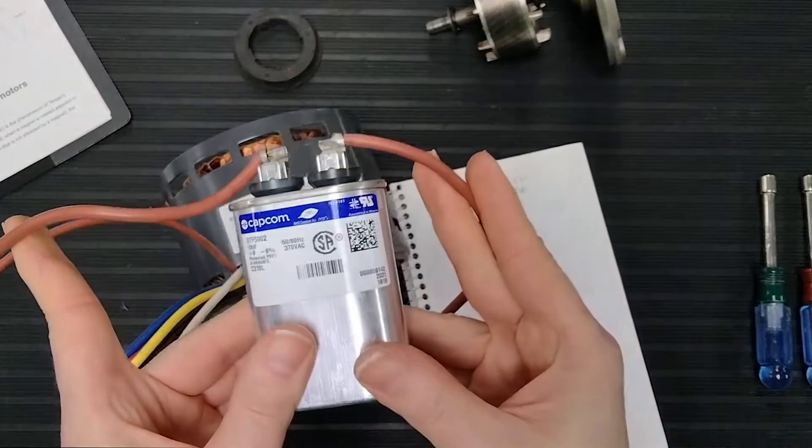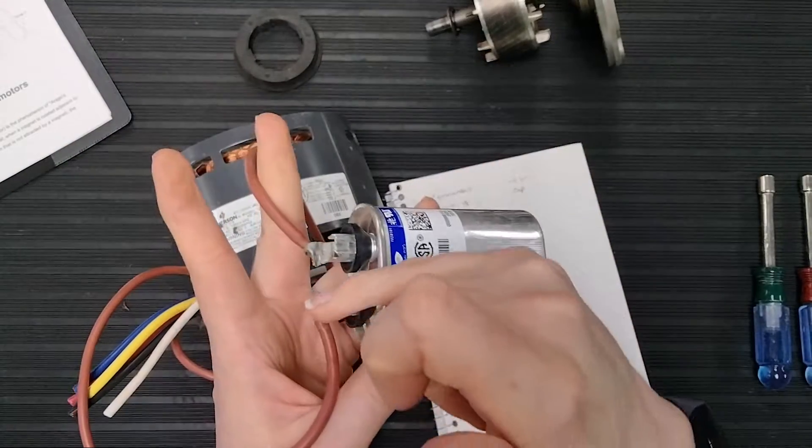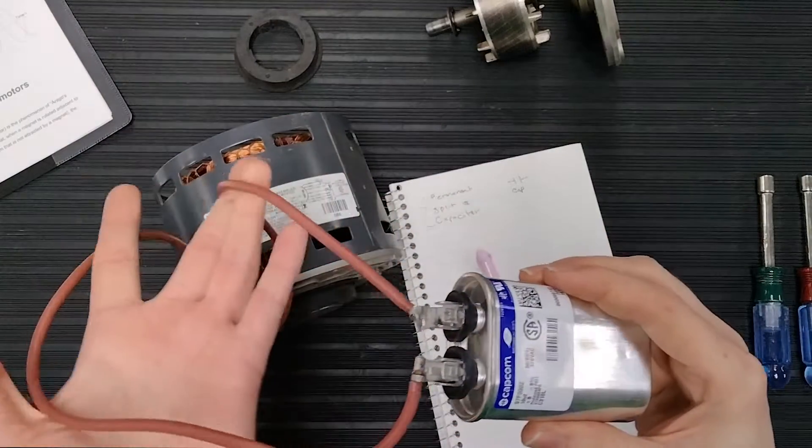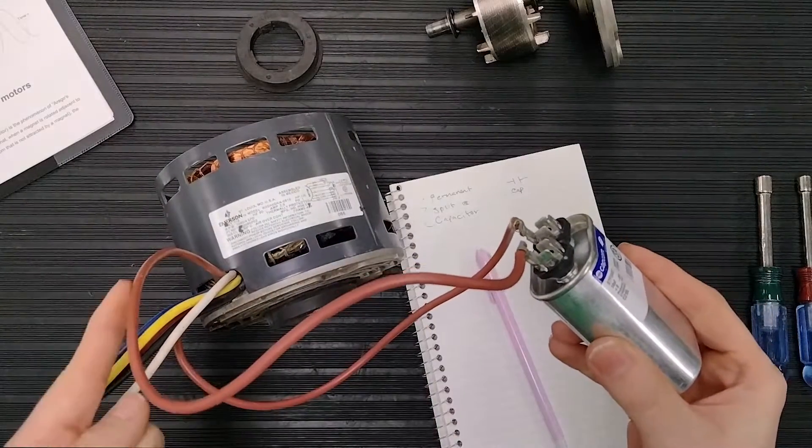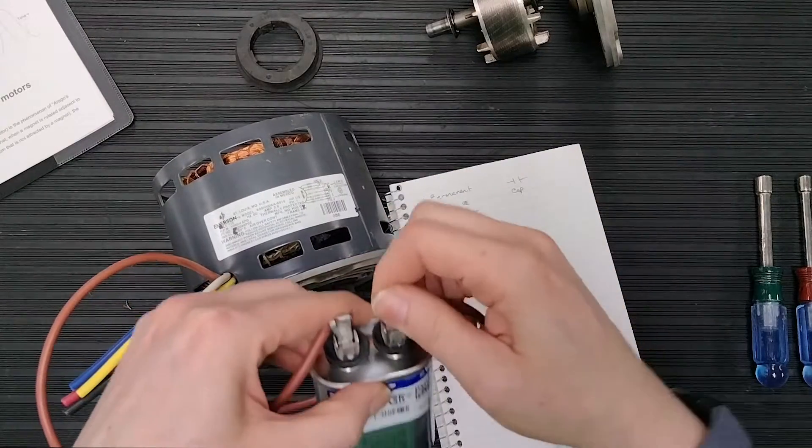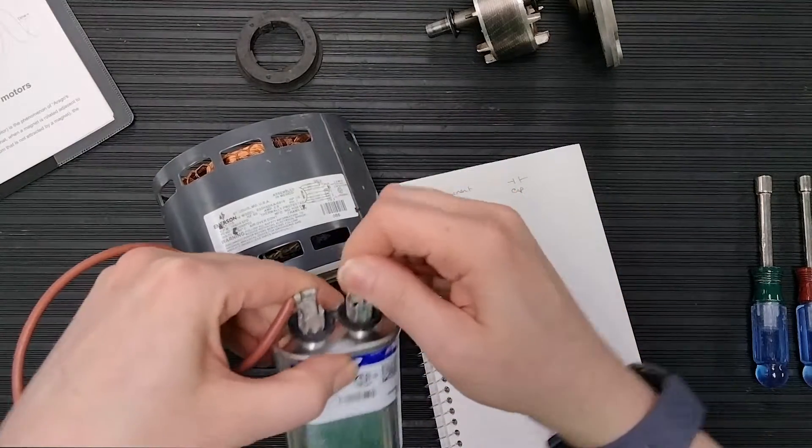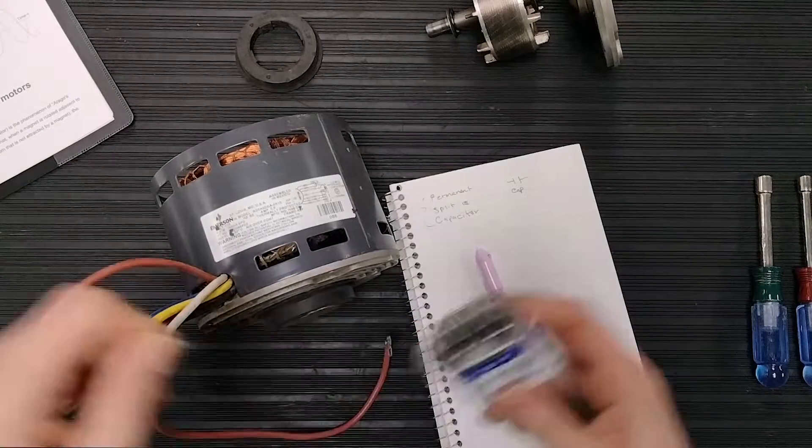The run capacitor stays in line while your system is on and it's energizing your fan motor. It will look something like this on your blower housing and your two wires create that line through on your motor, on your auxiliary winding, also known as your start winding.